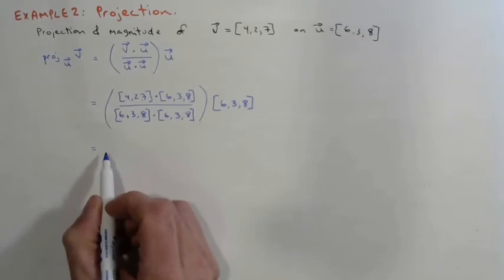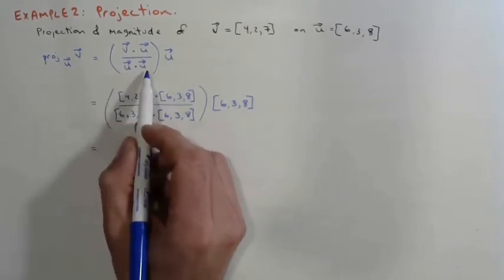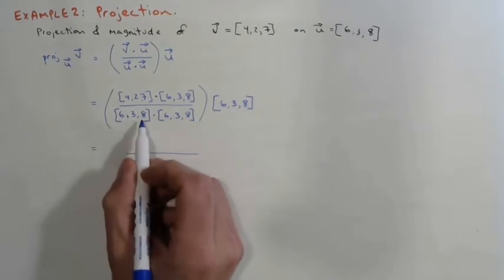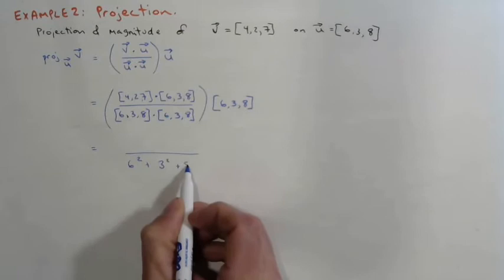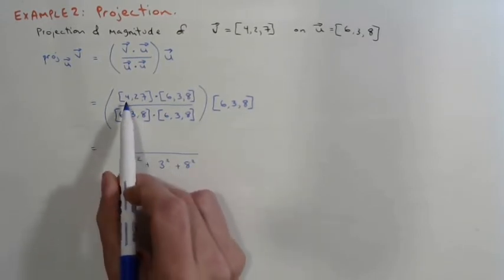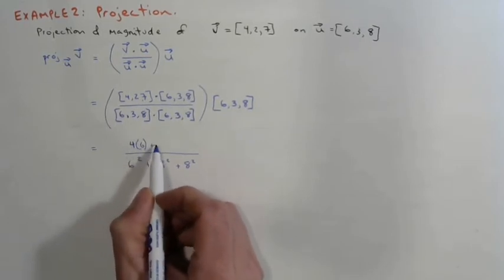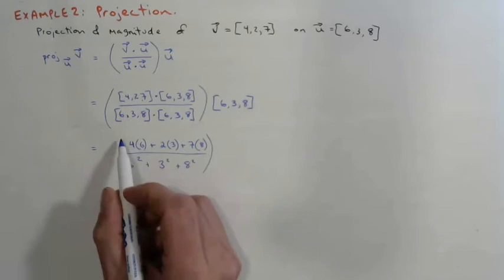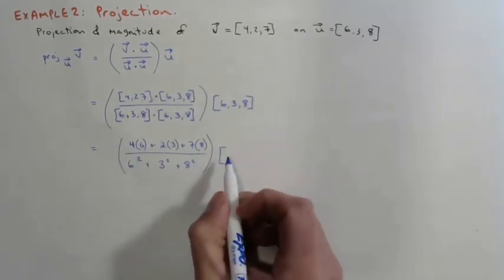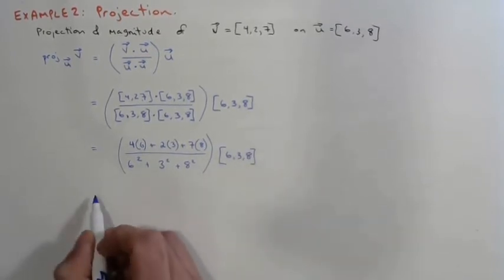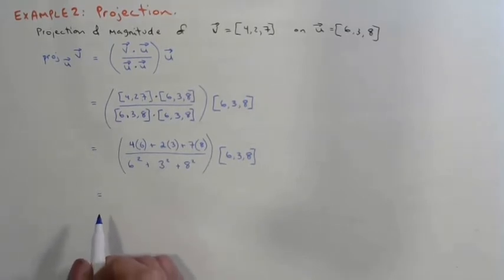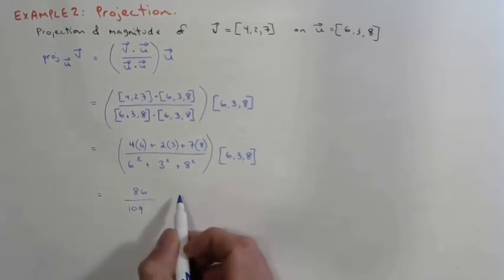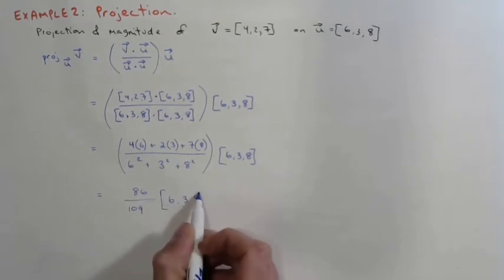Taking the dot product of the numerator: 4×6 + 2×3 + 7×8. The denominator U·U = 6² + 3² + 8². The numerator reduces to 86 and the denominator is 109. So the projection is (86/109)(6, 3, 8).